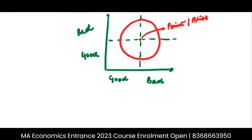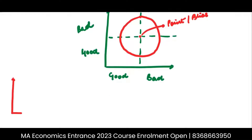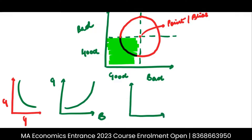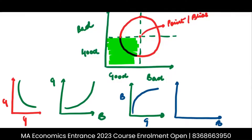If you have a good good on both axes, your indifference curve would look like this. If you have a bad good here and a good good here, your IC would be like this. If you have a good good here and a bad good here, your IC would be like this. And if you have a bad good on both axes, your IC would be like this.